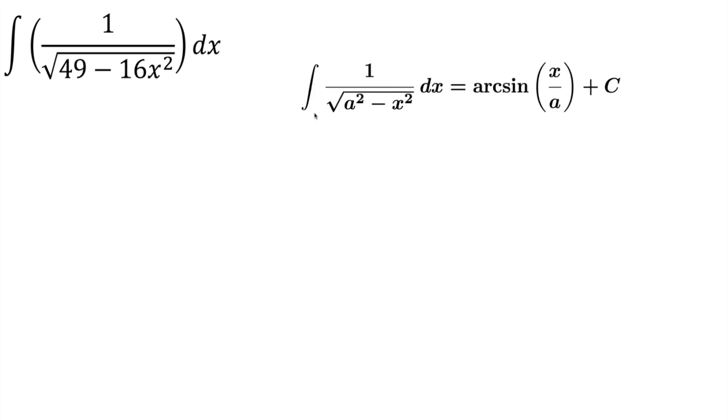So this problem involves knowing this identity right here, that the integral of 1 divided by the square root of a squared minus x squared dx is equal to arcsine parentheses x divided by a plus c. Now we don't have a squared exactly, and we don't have x squared exactly, we have to kind of rewrite this a little bit.